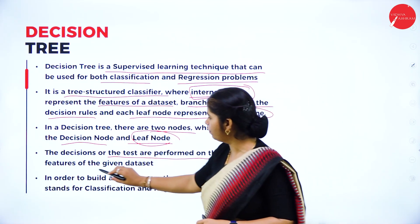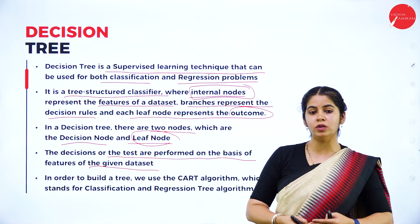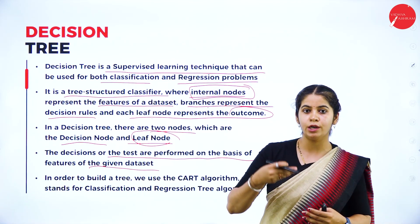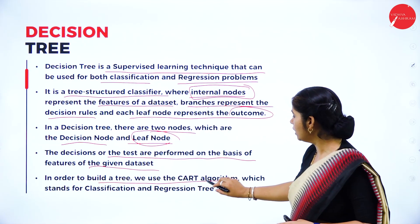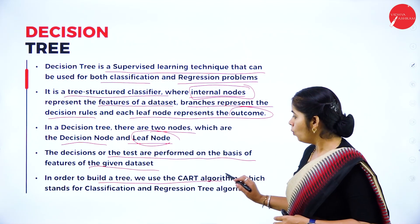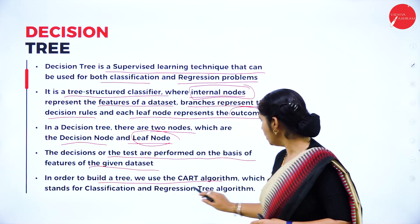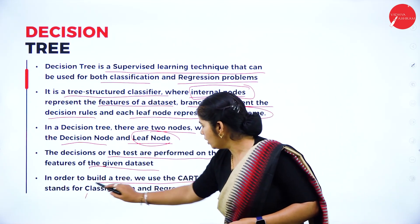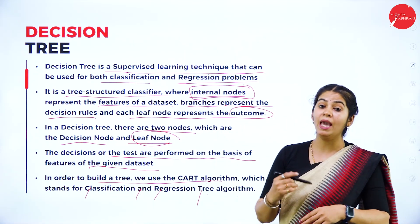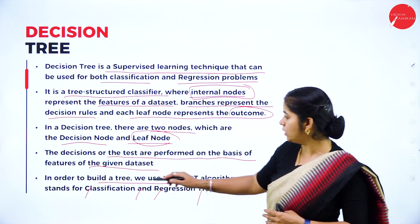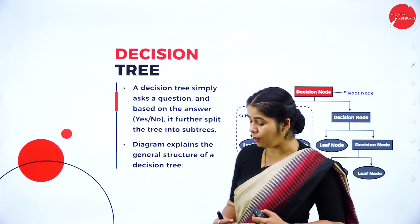Decisions or tests are performed on the basis of features of the given data set, depending on the given training. In order to build a tree, we use the CART algorithm — Classification and Regression Tree algorithm — which we use to make a decision from the decision node to the leaf node.